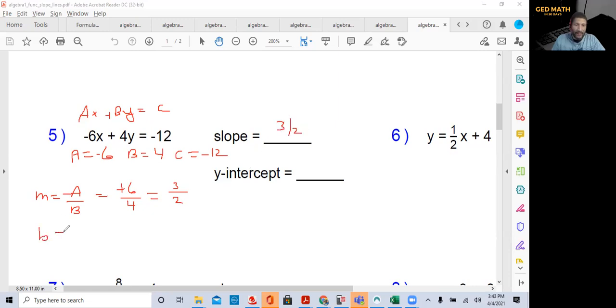To find my y-intercept, I'm going to do c over b. C is negative 12, b is four. A negative and a positive make a negative. 12 divided by four is three. So my y-intercept is negative three. If I want to put this equation in slope-intercept form, y equals three halves x minus three. Very easy.